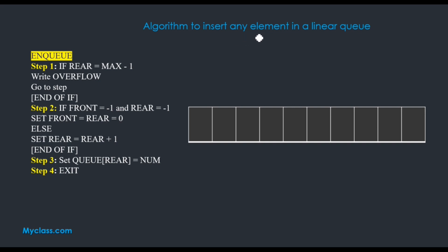Now let's discuss the algorithm to insert any element in a linear queue. The insertion operation of an element into a queue is called NQ — enqueue — which means the insertion of any element in a linear queue. The first case is we want to check the overflow condition: is there any free space to insert a new element? For that we check step 1: if rear equals max minus 1, then write overflow. We are implementing the queue using an array, so the array index starts from 0 to N minus 1.